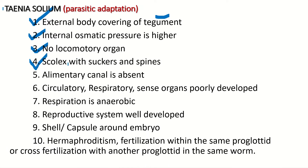They have a scolex with suckers and spines. The scolex with suckers and spines is very useful for attachment in the host intestine. With the help of suckers and spines found on the scolex, the organism attaches itself firmly to the intestinal walls of the host.